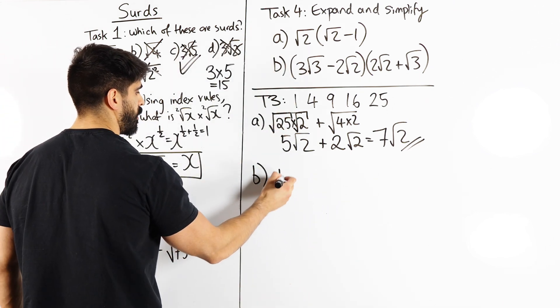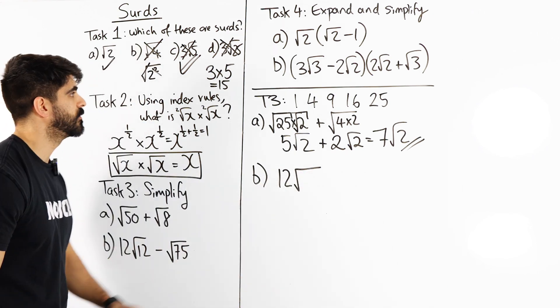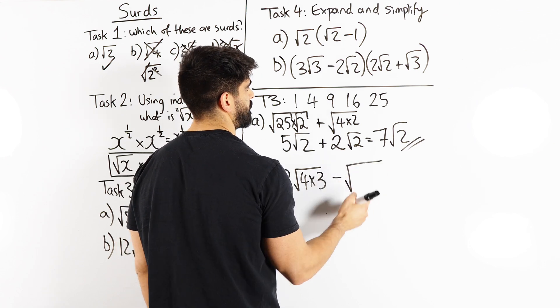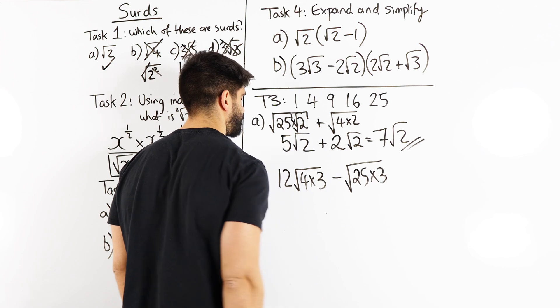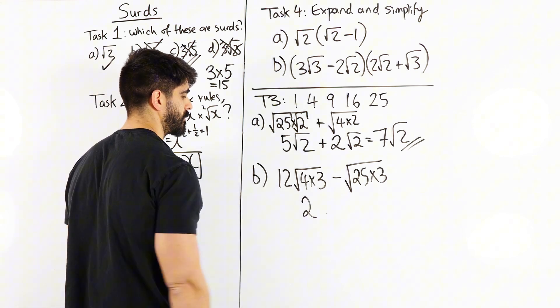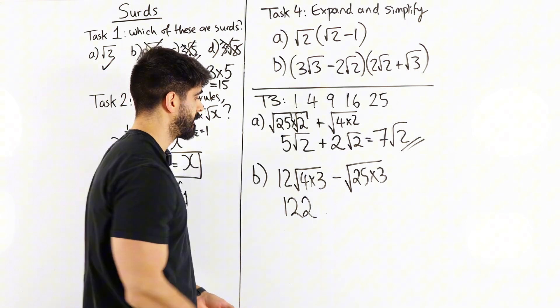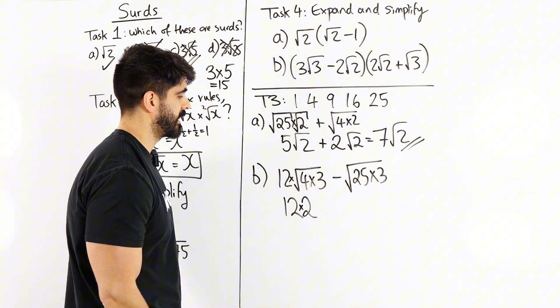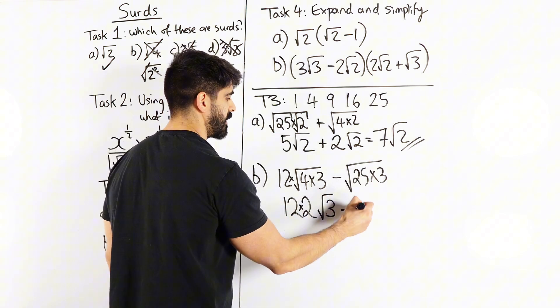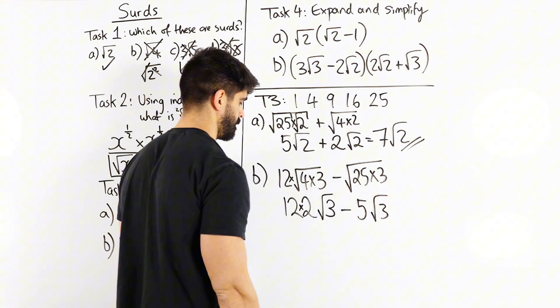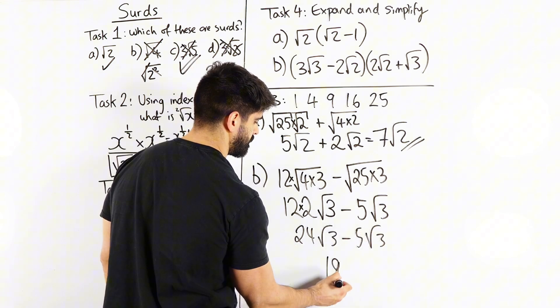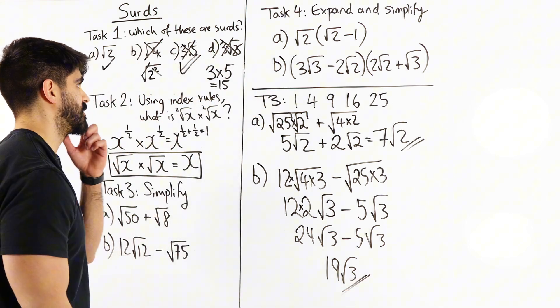Part b. I have 12 root 12. And I know 12 is 4 times 3. Minus root 75. Now 75 is 25 times 3. Now here we have to be careful. 12 root of 4. Root of 4 is 2. But I'm not just going to write the 12 next to it, that doesn't make any sense. Between the 12 and this is a multiplication symbol. We're doing 2 lots of that. So root of 4 is 2. And we have the root of 3 which is irrational. Minus root of 25 is 5. And then we have root of 3. 12 times 2 is 24. Root 3 minus 5 root 3. 24 minus 5 is 19. And that's how we simplify surds.